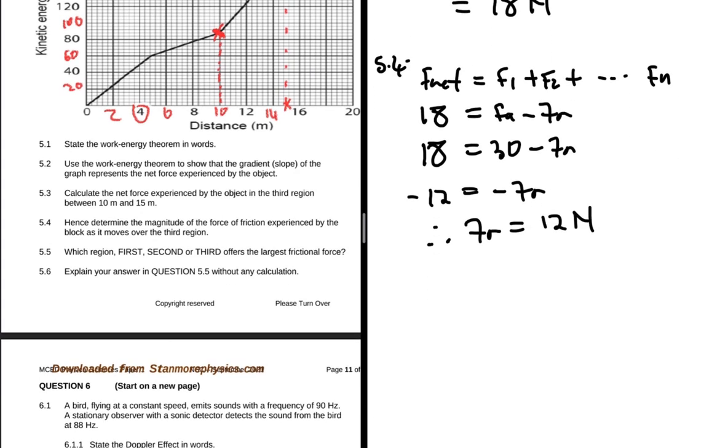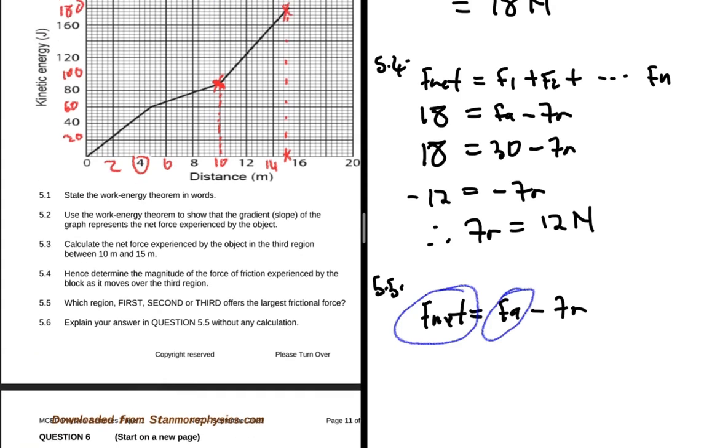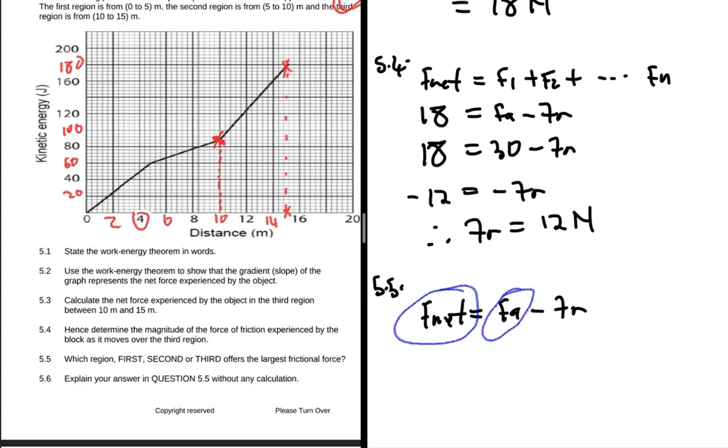That's 5.4. Let's move to 5.5. We see in which region, first, second, or third, offers the largest frictional force. So again we know that F net equals F applied minus Fr. One thing, the steeper the slope, the greater the value of F net. And F applied is kept constant, so basically friction is the one that is determining the steepness of the slope. So where the slope is the steepest, then we have less friction.